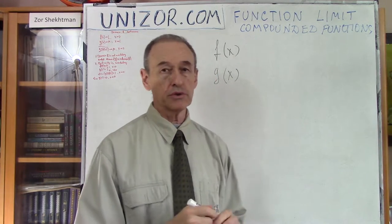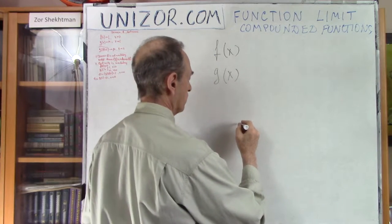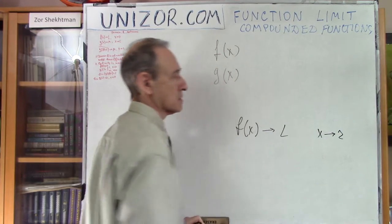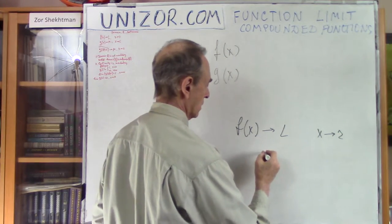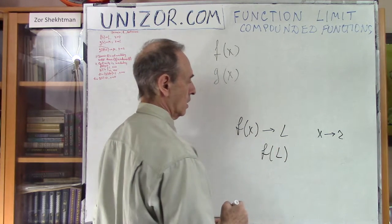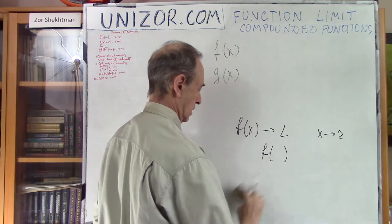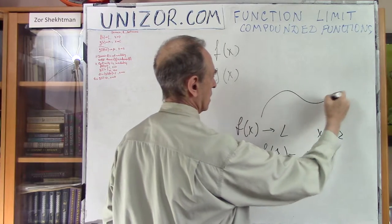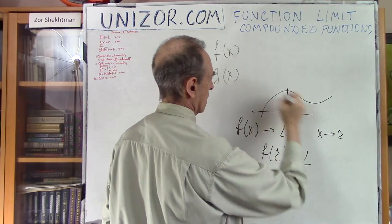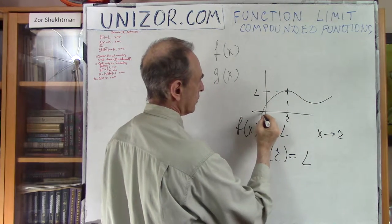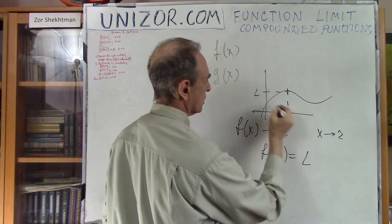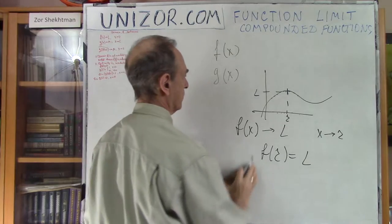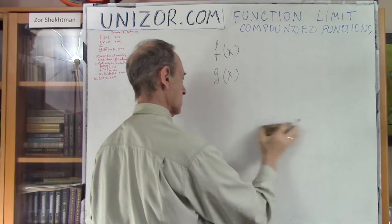Let me just remind you that a function is called continuous if whenever the argument goes to some value r, the continuous function has a value equal to l at that point. So whenever we are moving towards point r from either side, we have a certain limit, and that limit should actually equal the value at that particular point. Then the function is continuous — we talked about this in one of the previous lectures.